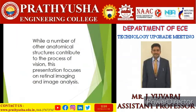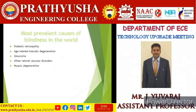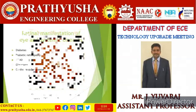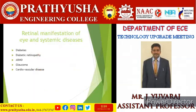There are a number of anatomical structures that contribute to the process of vision. This presentation focuses on retinal imaging and how the image has been analyzed. The different causes of blindness include diabetic retinopathy, age-related macular degeneration, glaucoma, other retinal vascular disorders, and myopic degeneration. Because of dysfunction in the retina, many diseases can be created, and ophthalmic imaging has come into the picture with a wide range of ongoing research in optical imaging.